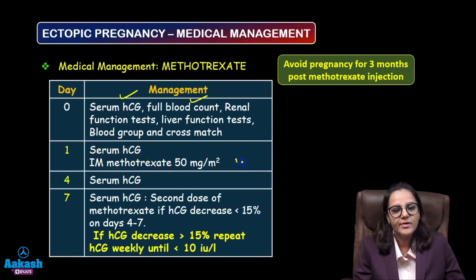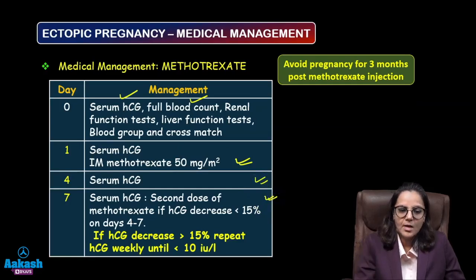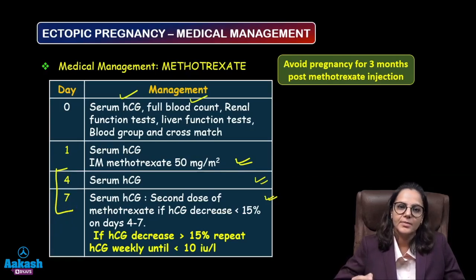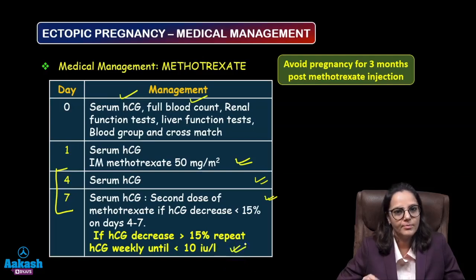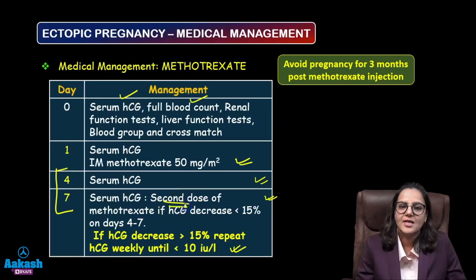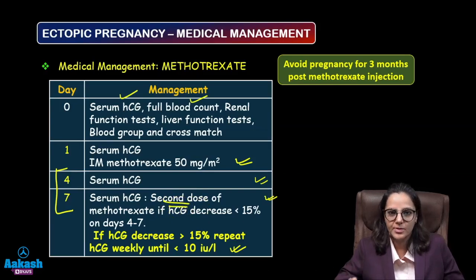On Day 1, take serum beta-hCG and give intramuscular methotrexate 50 mg/m². On Day 4, take a serum beta-hCG sample. On Day 7, take another serum beta-hCG sample. If the beta-hCG decreases by more than 15% between Day 4 and Day 7, repeat beta-hCG weekly until values fall below 10 IU/L. If there is no decrease between Day 4 and Day 7, repeat a second dose of methotrexate on Day 7.